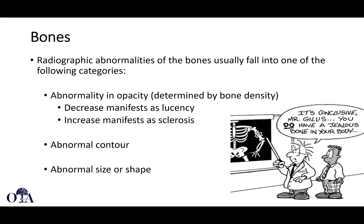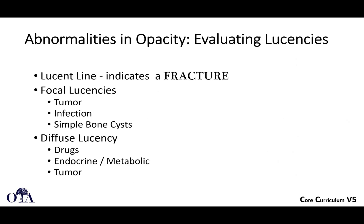Radiographic abnormalities in bone usually fall into one of the following categories: an abnormality in radio opacity determined by bone density — we may see a lucency, or an increase in bone opacity indicating sclerosis or more density. We may also see an abnormal contour, size, or shape. A lucency could indicate a fracture propagating beyond where we thought it ended. Focal lucencies could be a tumor, infection, or a bone cyst. Diffuse lucencies could indicate an endocrine problem, metabolic problem, or a tumor.